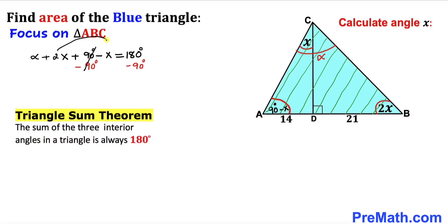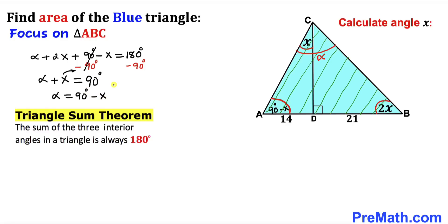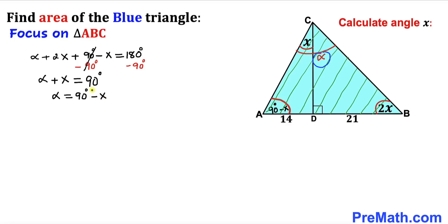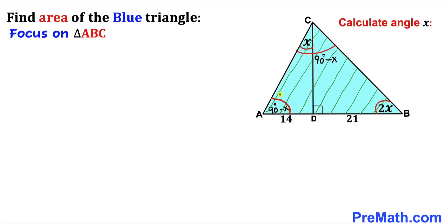Subtracting 90 degrees from both sides and combining like terms, we get alpha plus x equals 90 degrees. Moving x to the right-hand side gives us alpha equals 90 degrees minus x.